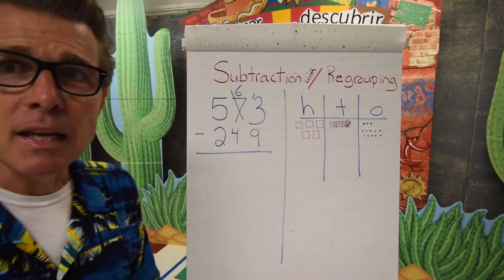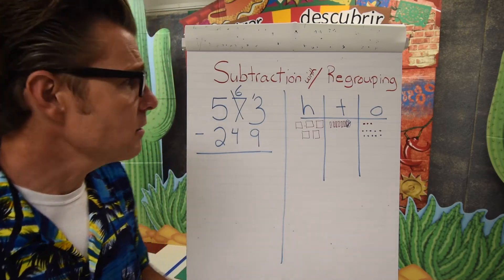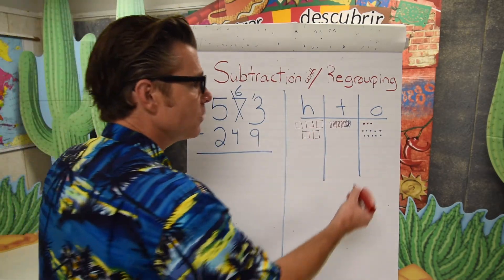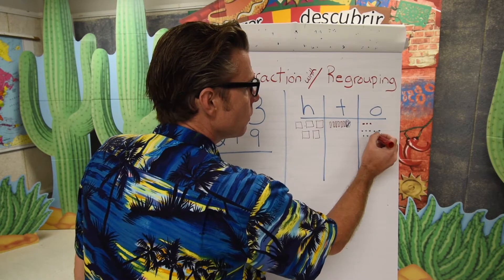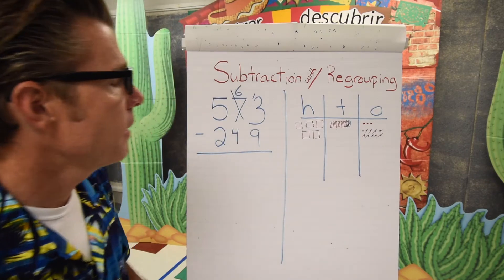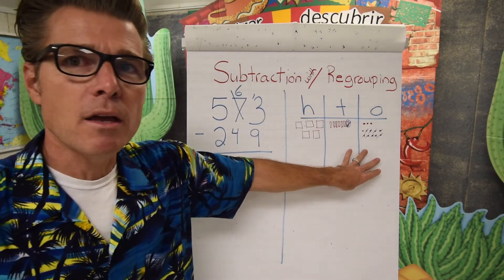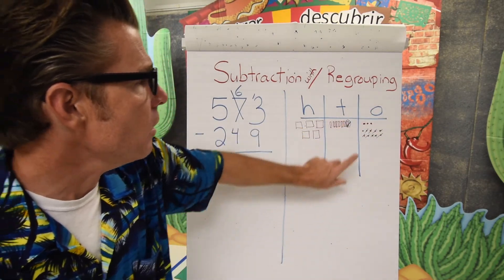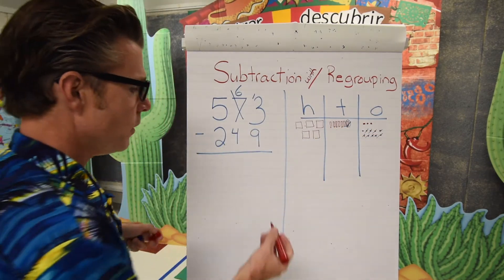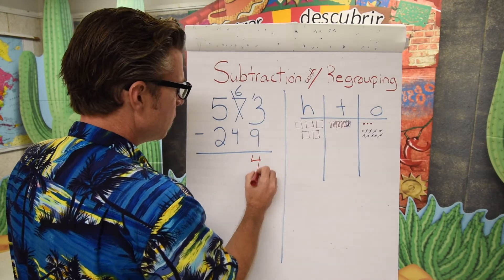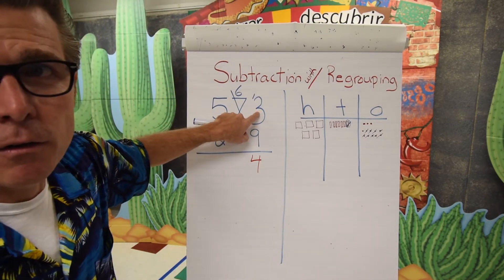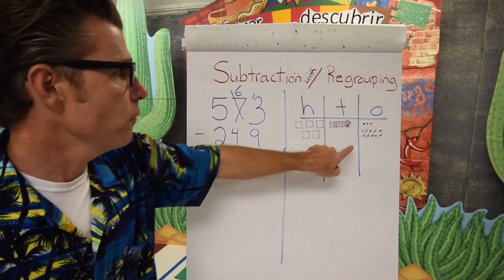Now if I have thirteen and I'm trying to take nine away, that is possible. I'll mark out nine of my ones — one through nine — and when I take nine away from thirteen I'm left with four. So I put four here because the difference between thirteen and nine is four.